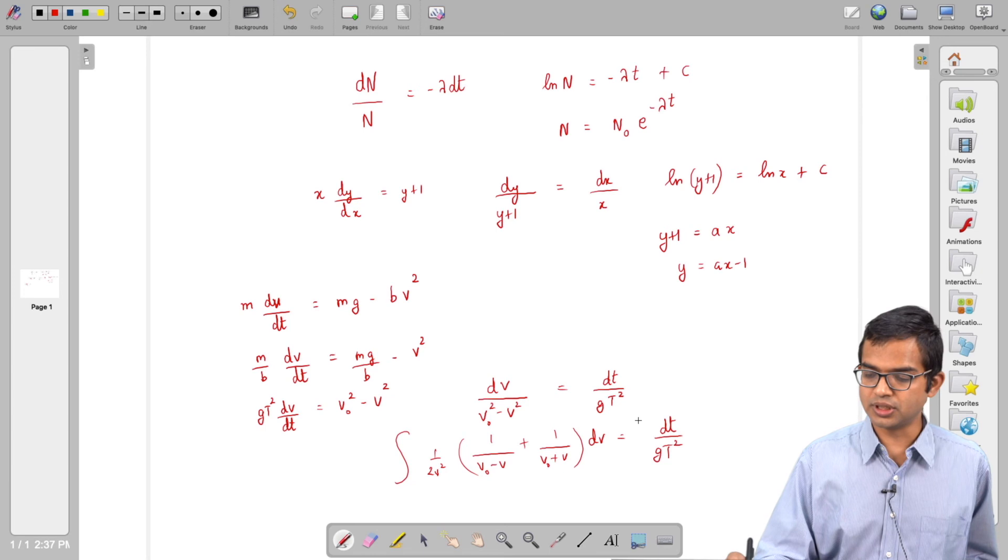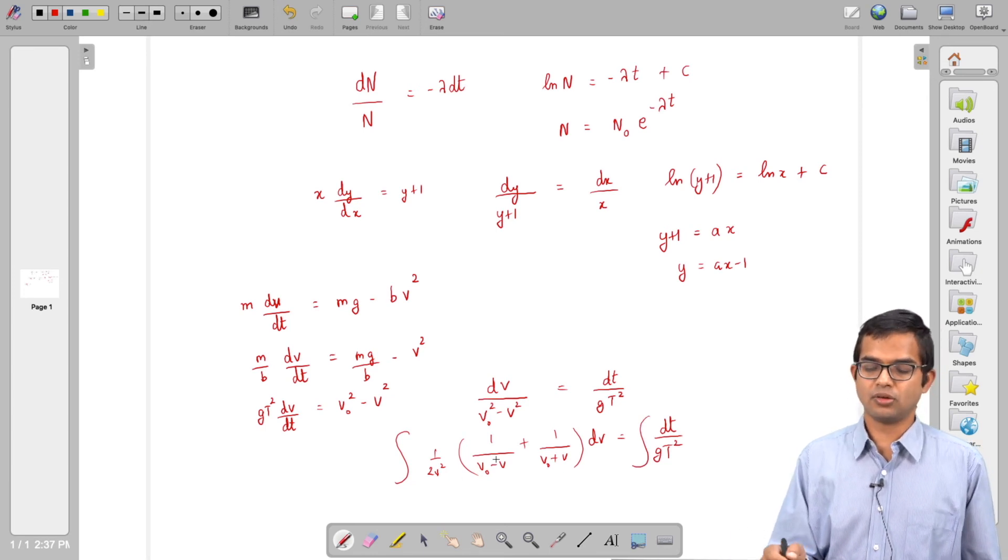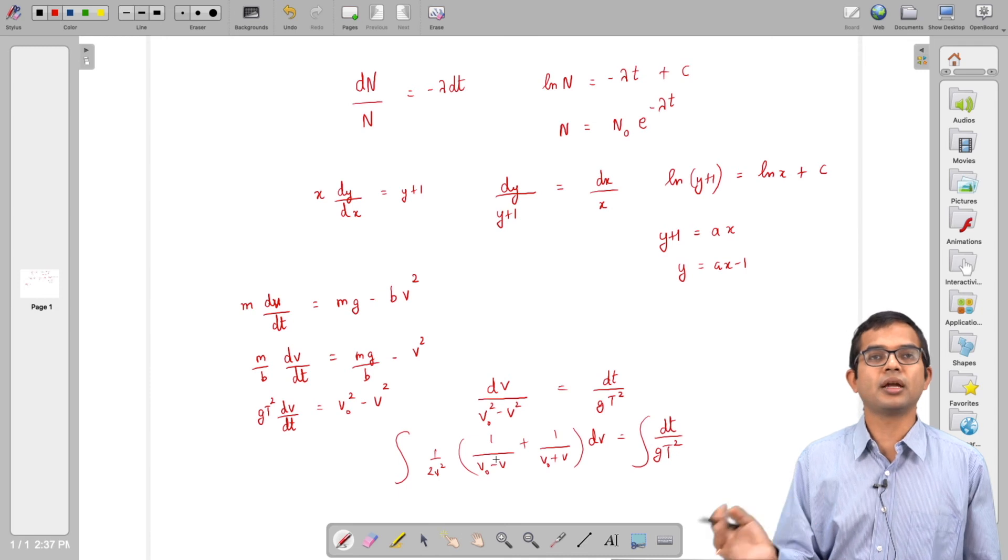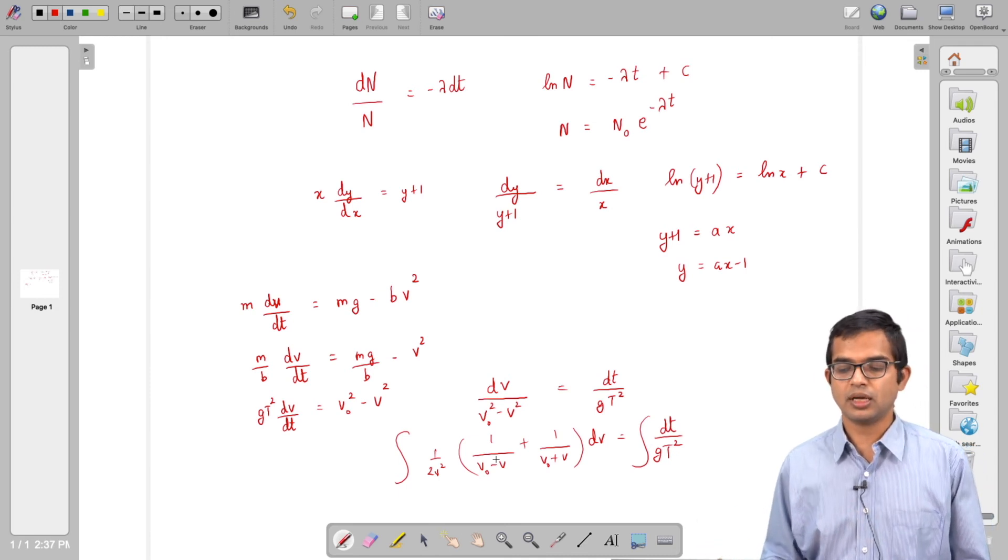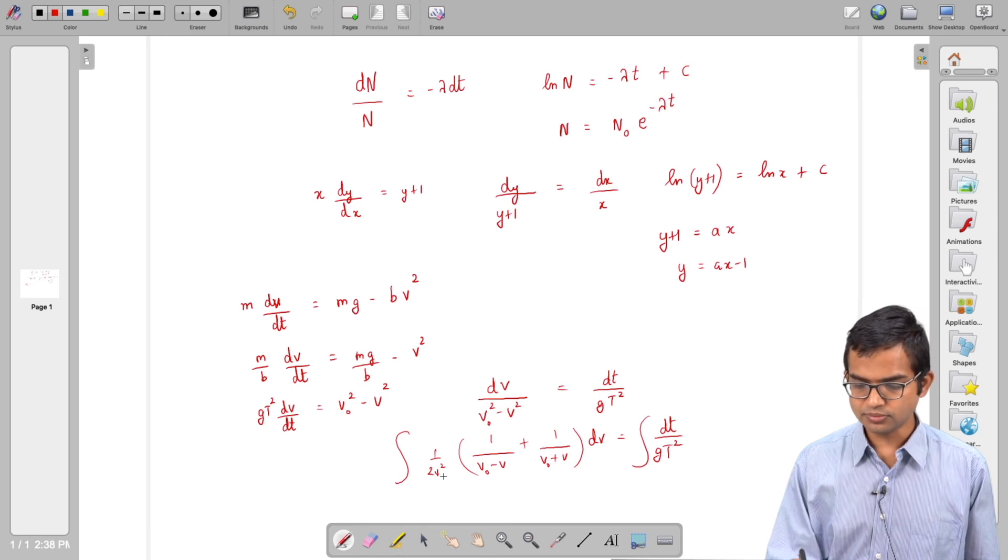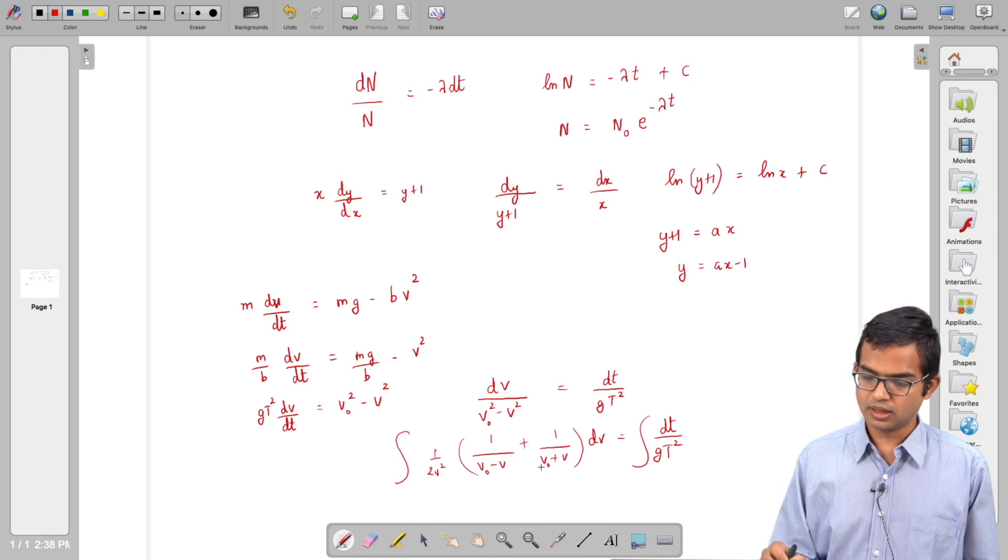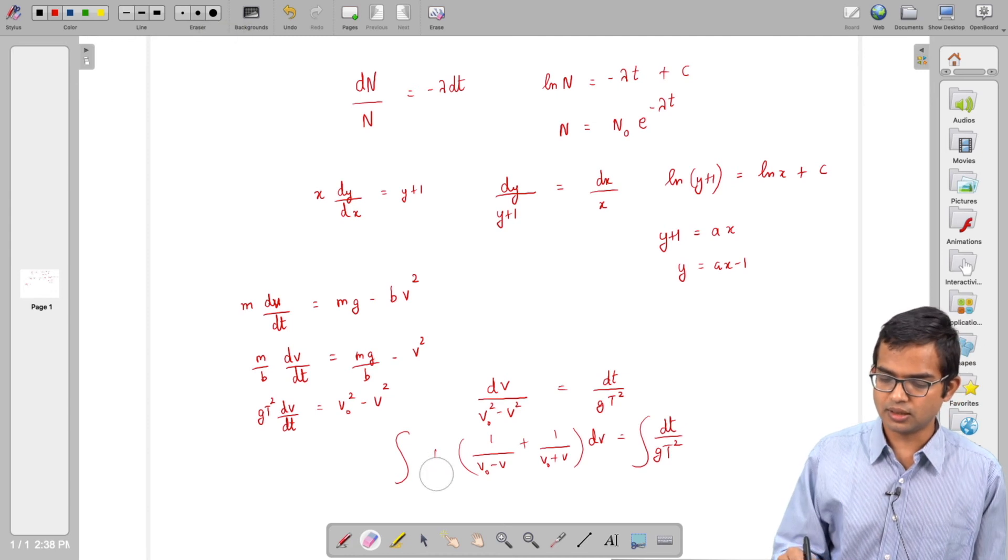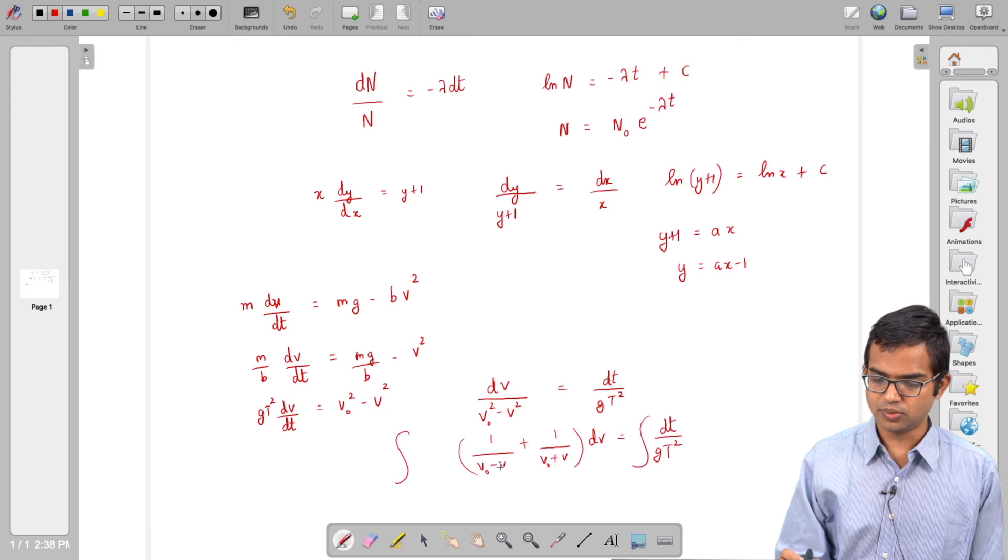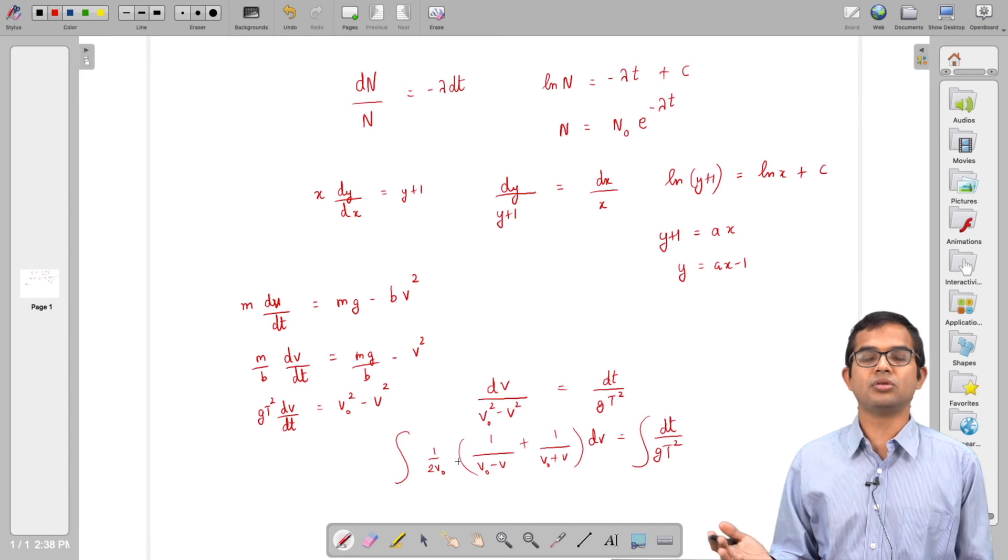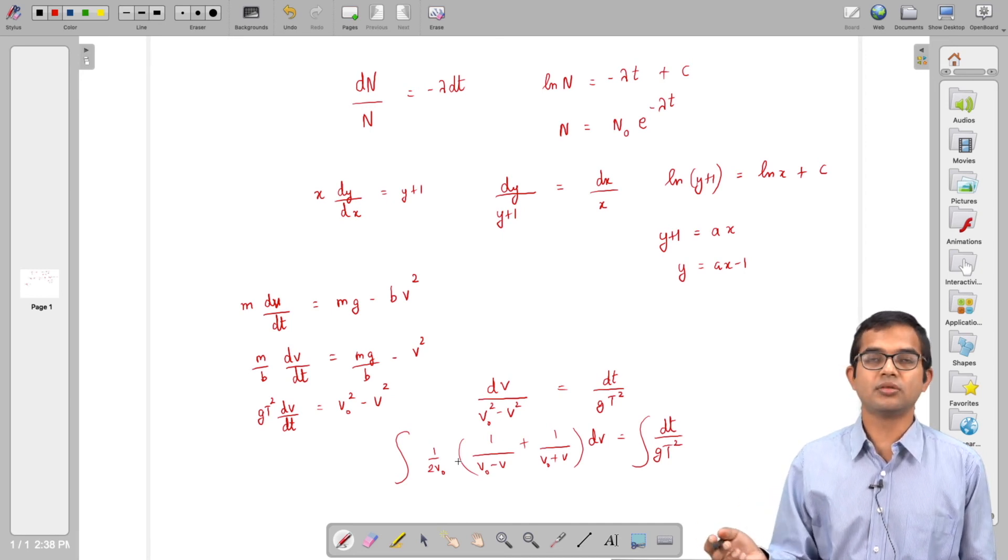This is slightly harder than the earlier two but still probably familiar. We write v₀² - v² as partial fractions: (v₀ - v)(v₀ + v). If I add these two terms, I will get 2v₀, so I divide by 2v₀. I can write this as (1/(v₀-v) + 1/(v₀+v))dv/(2v₀) = dt/(g/v₀²). Now we can integrate both sides. You will get log(v₀-v) with some coefficient minus another log(v₀+v) on the left-hand side. You can collect these two log terms, and on the right-hand side you just get an exponential of t. You have to carefully work out the algebra.